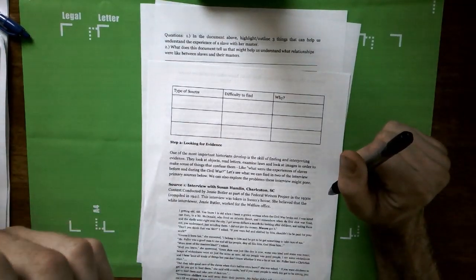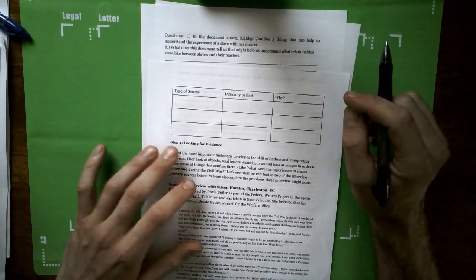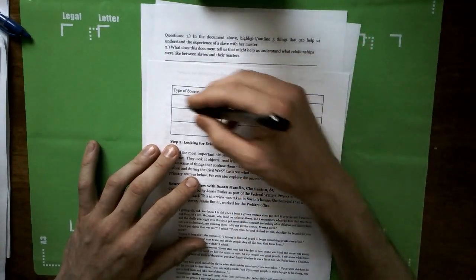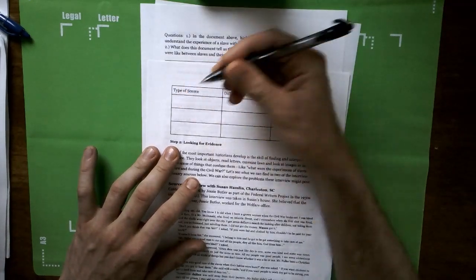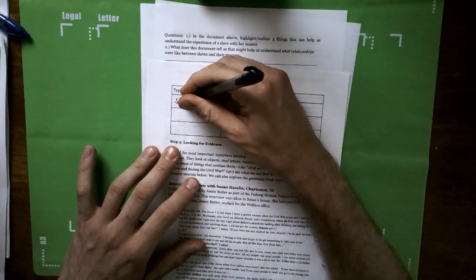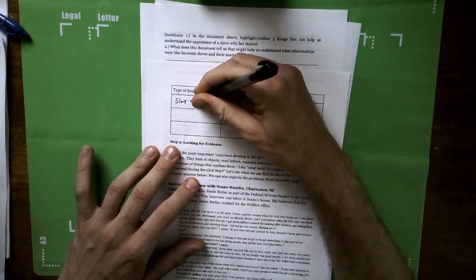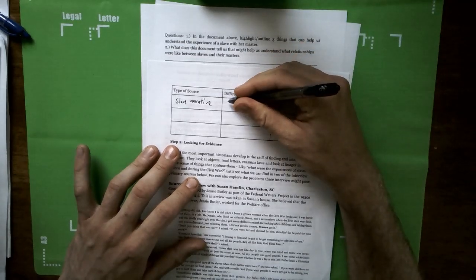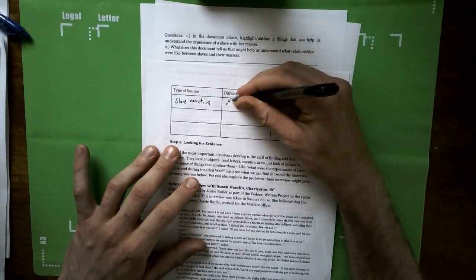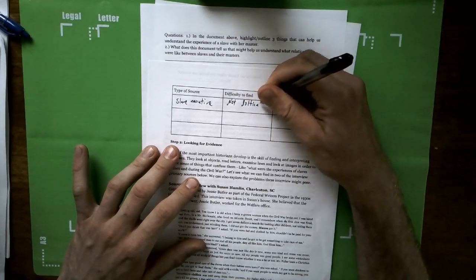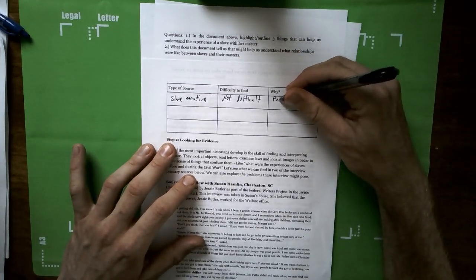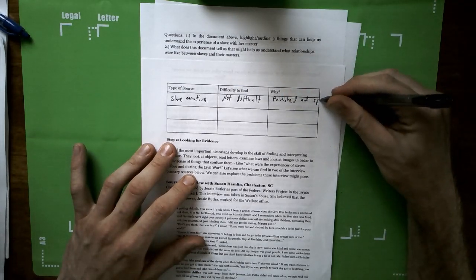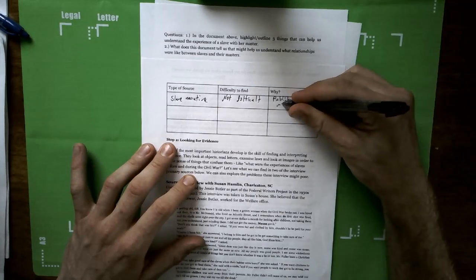So since we're talking about slavery, you might want to look at something like a slave narrative, as I know you folks have done in your English classes and things like that. So we'll write type of source, slave narrative, and the difficulty to find it. We'll say not difficult.